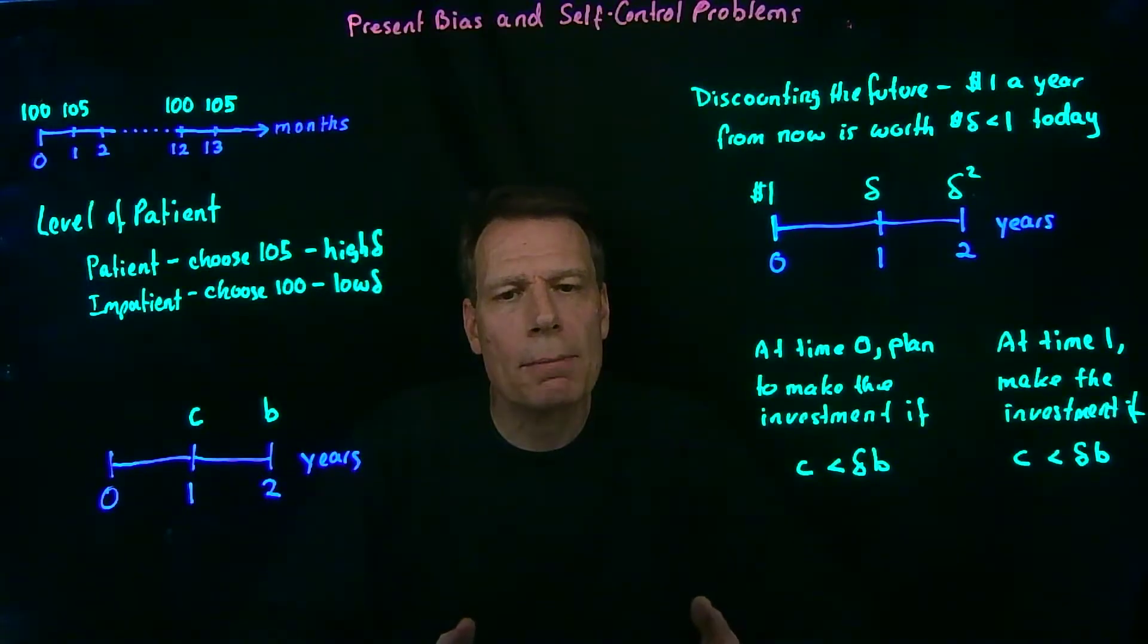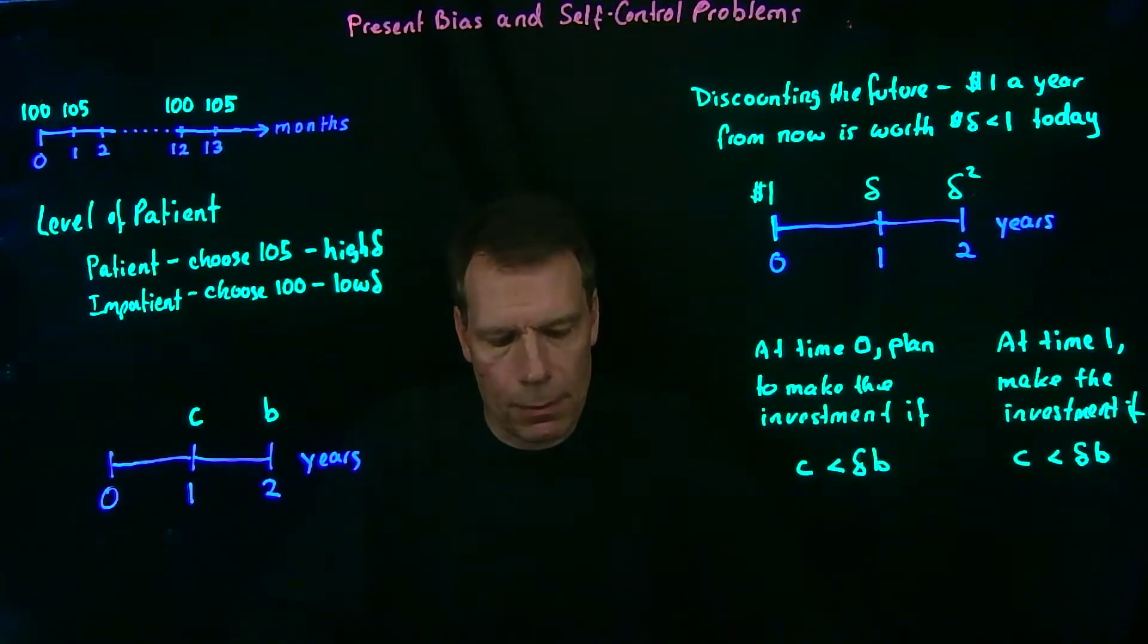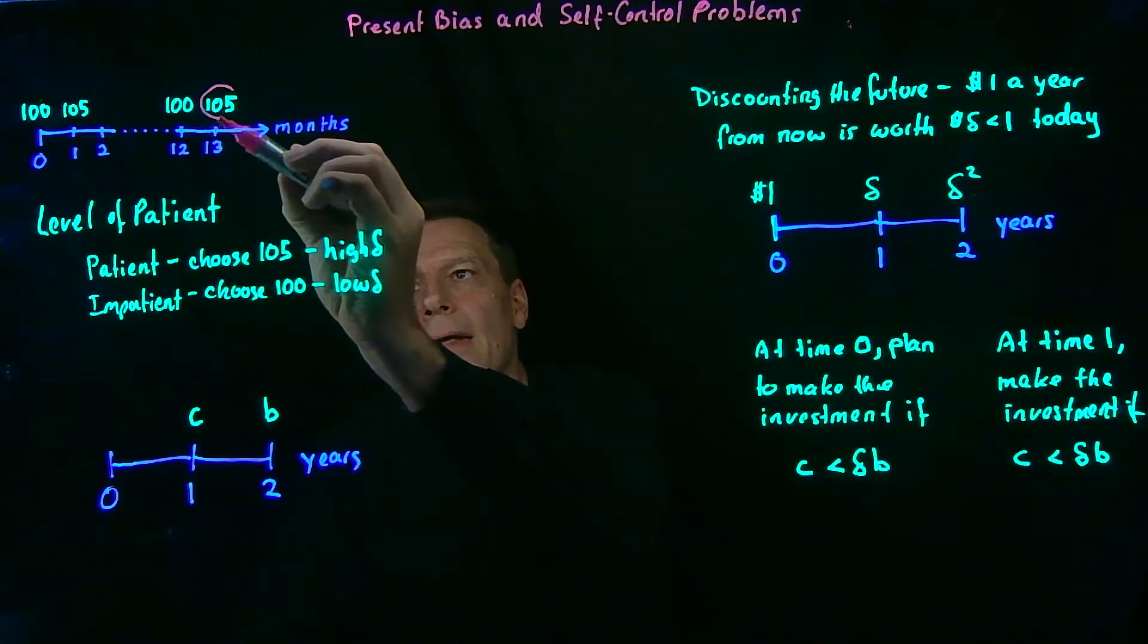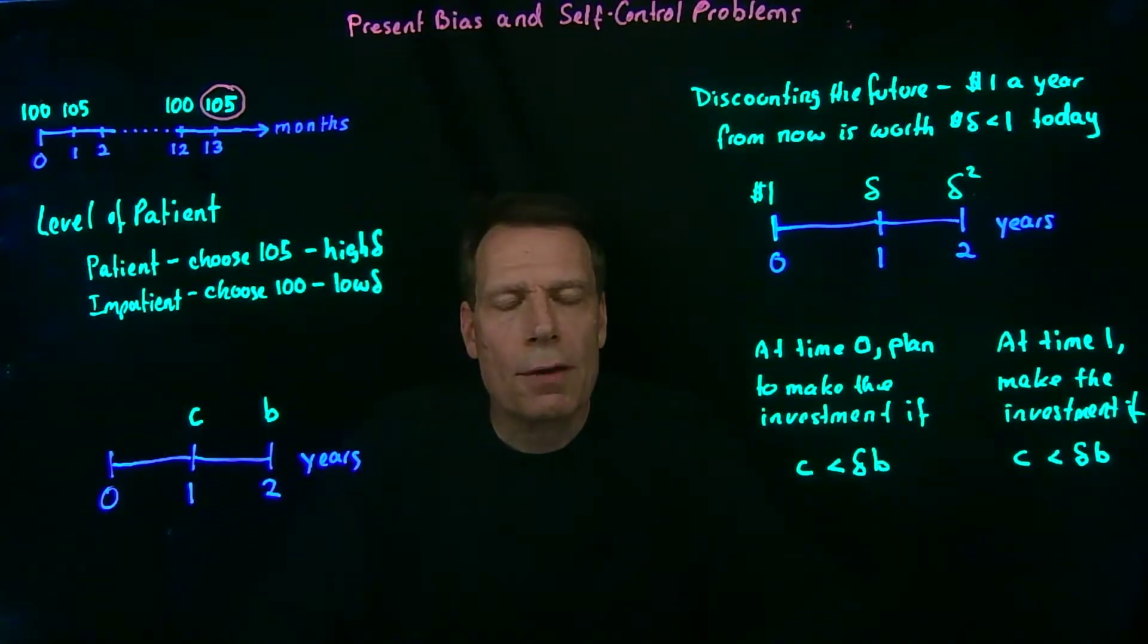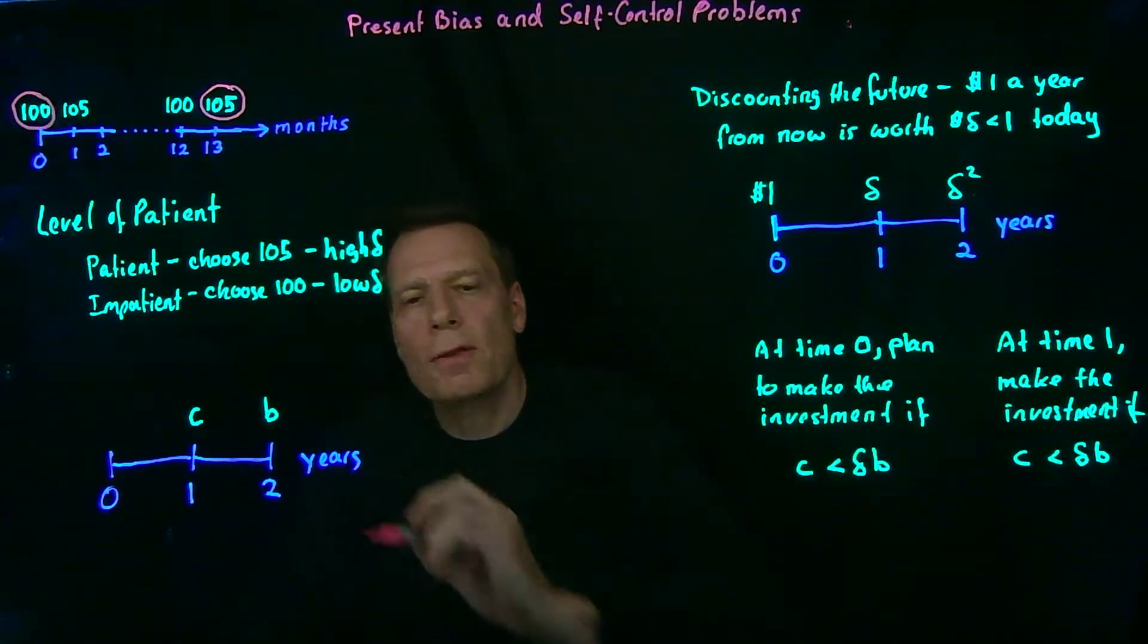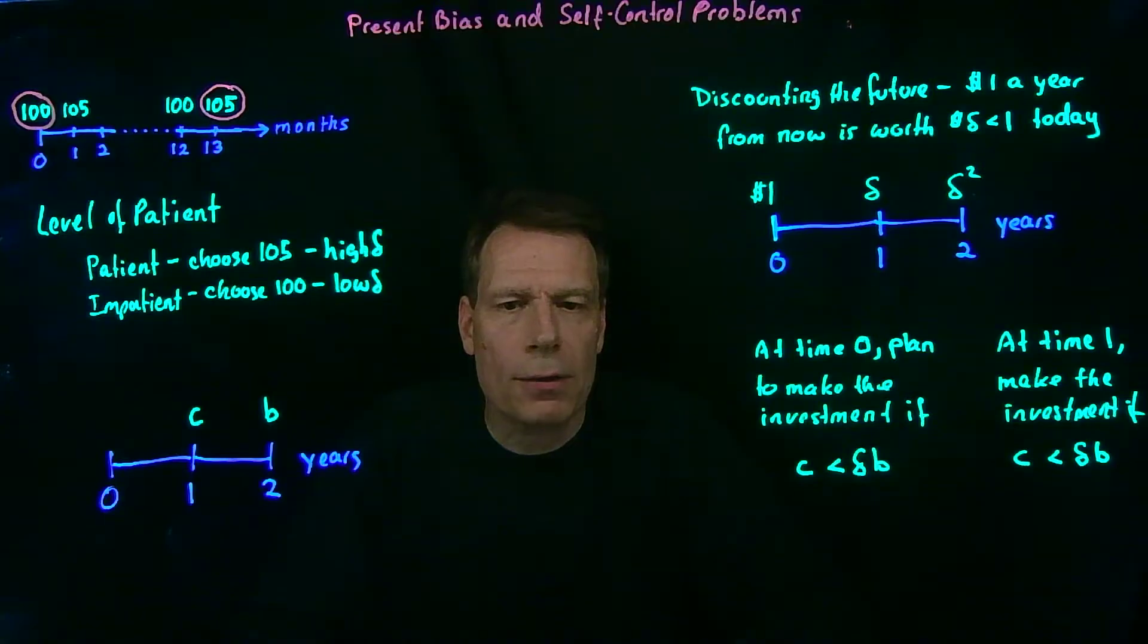But their behavior will be time consistent. When psychologists do experiments like this, they find that some people will choose when they think about the future to wait and say, we're going to choose that $105 thirteen months from now rather than the $100 twelve months from now. But when the choice occurs in the present, they choose to go for the $100 now rather than wait for the extra $5 a month from now. Now, that behavior is not time consistent.